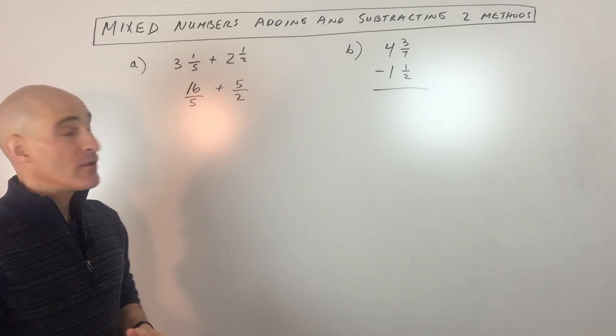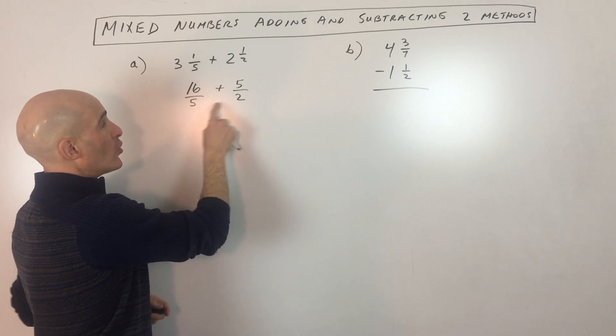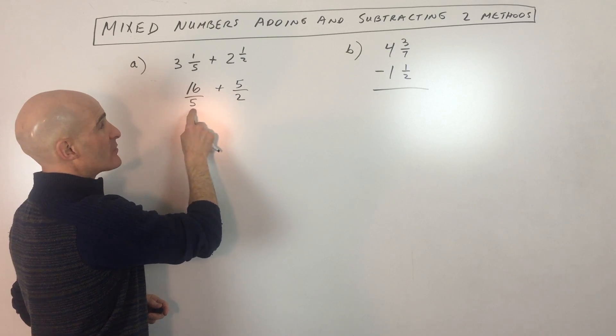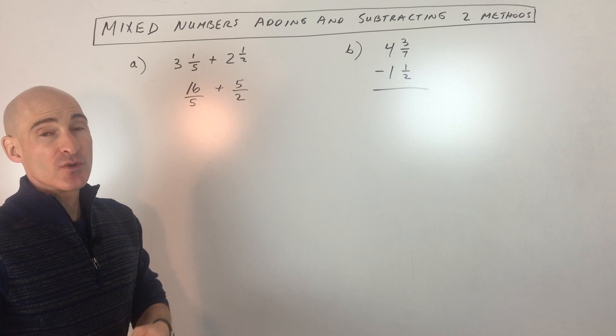Now in order to add or subtract fractions, you have to have the same denominator. So in this case, the lowest common denominator is the smallest number that five goes into and two also will divide into. So in this case, it's 10.